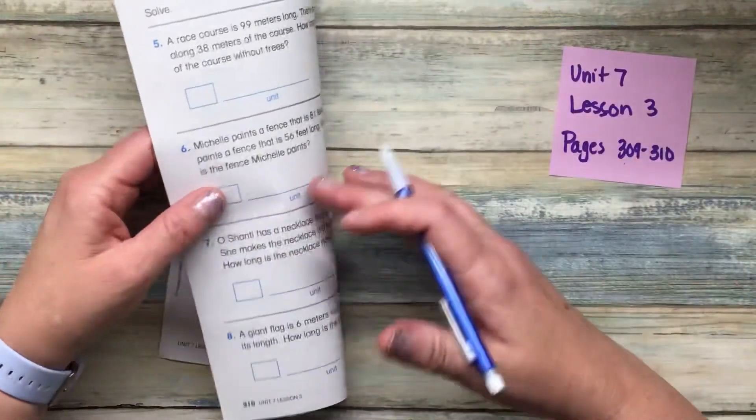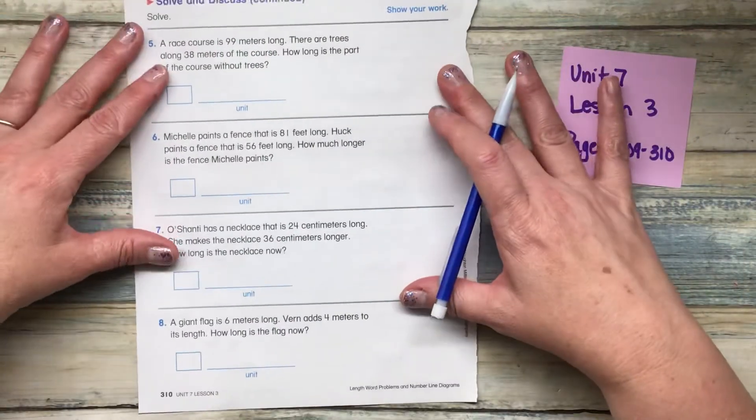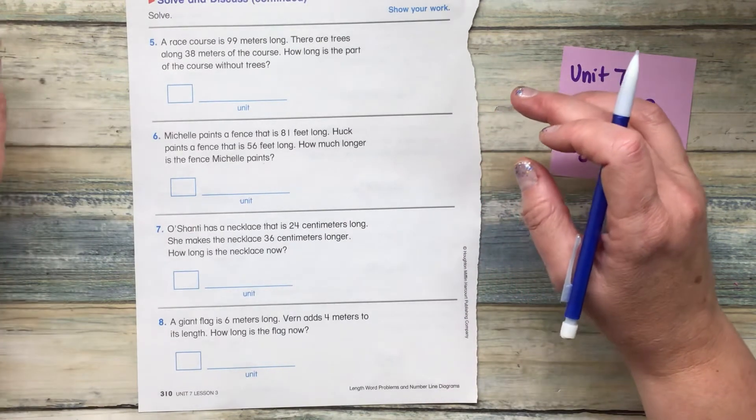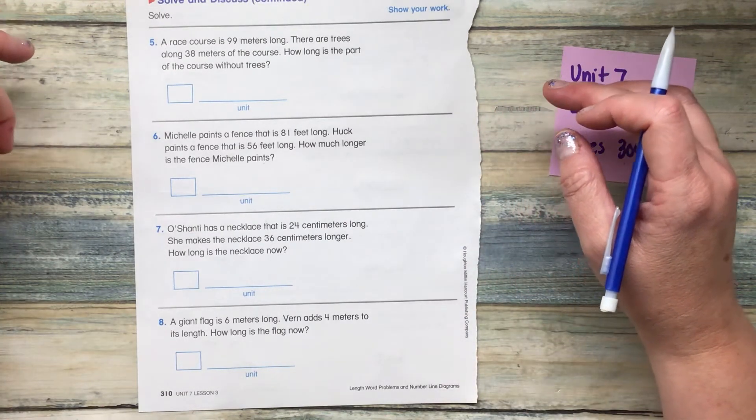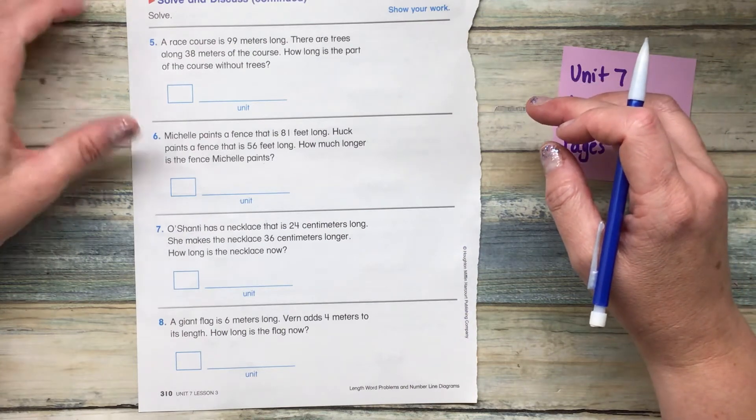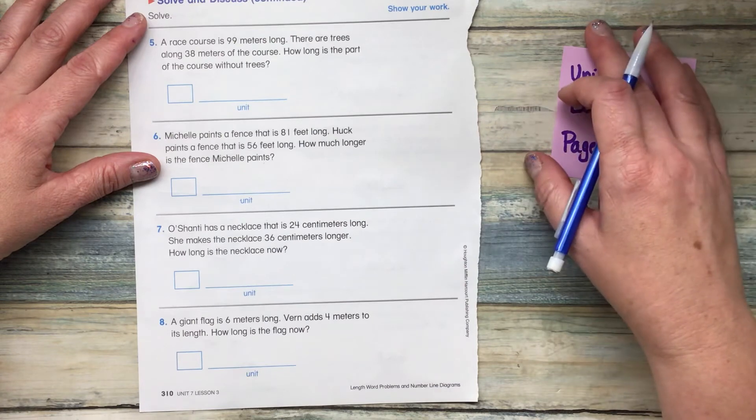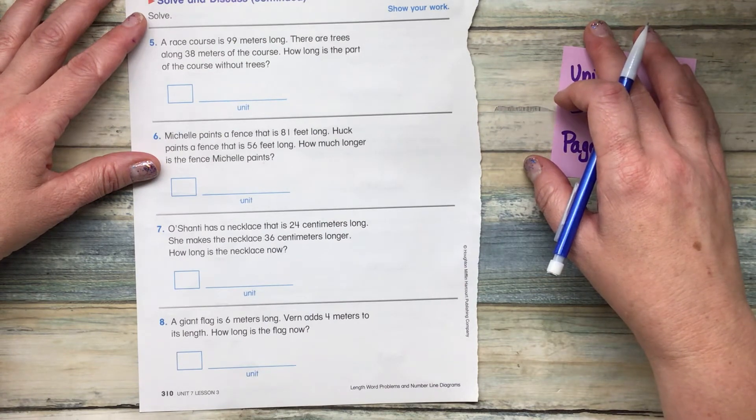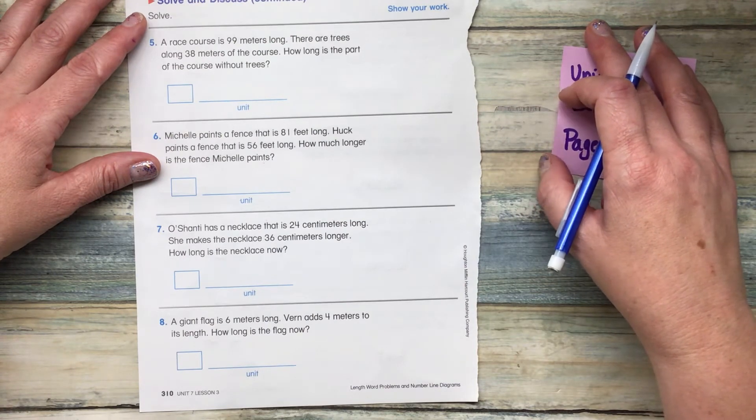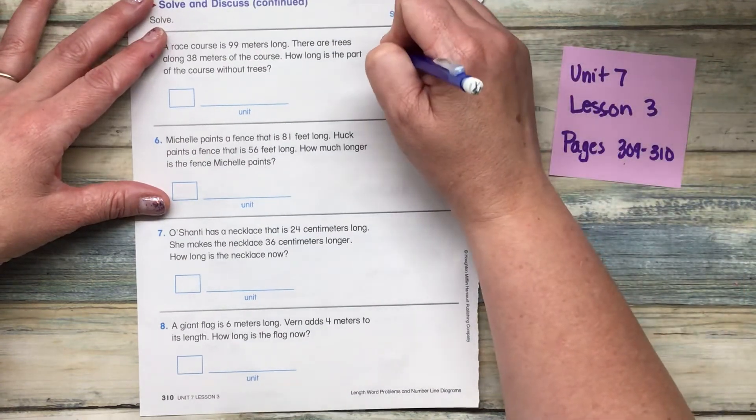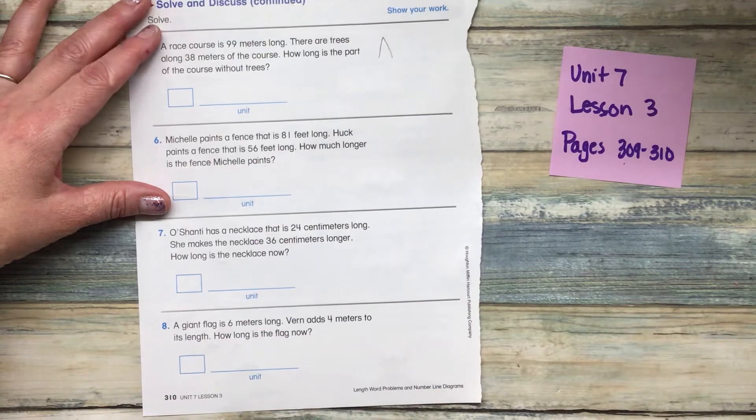So I'm going to turn my page over since we're continuing with solving these equations. A race course is 99 meters long. There are trees along 38 meters of the course. How long is the part of the course without trees?